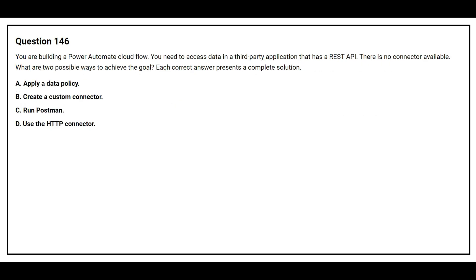Question number 146. You are building a Power Automate cloud flow. You need to access data in a third-party application that has a REST API, but there is no connector available. What are two possible ways to achieve the goal? Option A: Apply a data policy. Option B: Create a custom connector. Option C: Run Postman. Option D: Use the HTTP connector. The correct answers are Option B, create a custom connector, and Option D, use the HTTP connector.